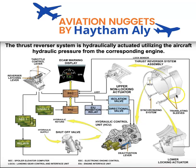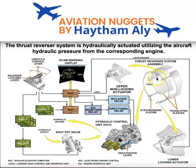Also, as the translating sleeve moves aft, cascade vanes are exposed to redirect the fan discharge airflow in the forward direction at a certain angle, to protect the critical area of the aircraft. Each translating sleeve is powered by two hydraulic actuators — one upper actuator and one lower actuator.